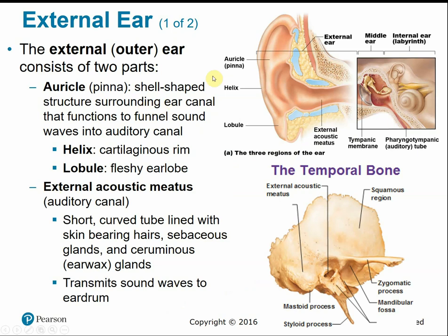The external outer ear consists of two main parts. The auricle, sometimes called the pinna, is the oddly shell-shaped structure on the outside that funnels sound waves into the ear canal. Parts include the helix — the cartilage rim — and the ear lobe. The external acoustic meatus is the auditory canal where sound waves funnel to make contact with the eardrum.